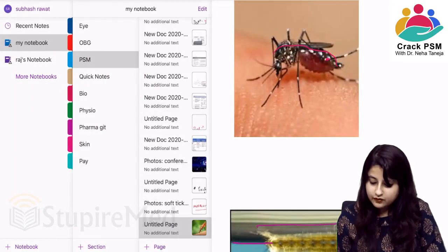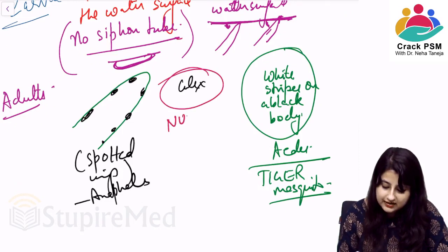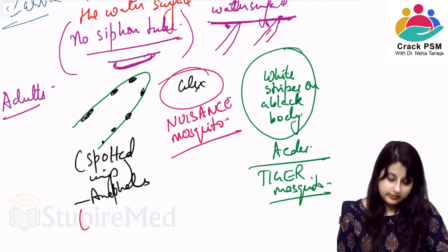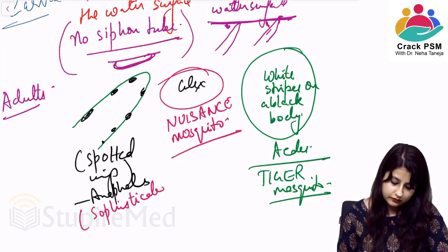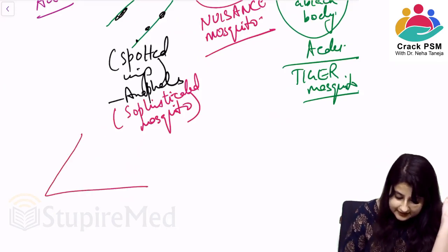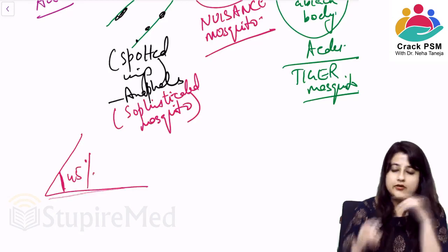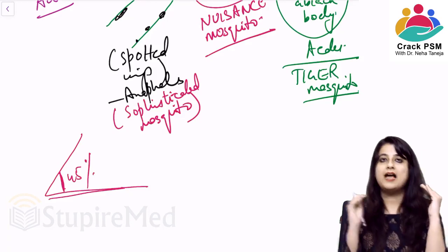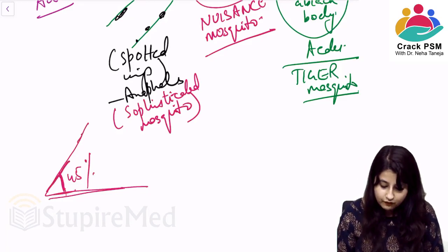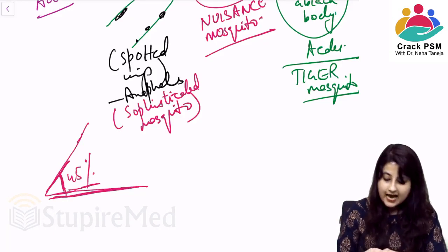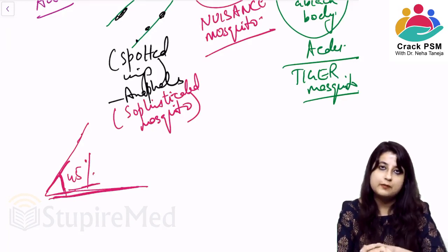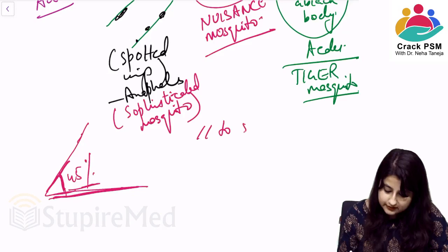Culex is also called the nuisance mosquito because it breeds in dirty water. Anopheles, breeding in clean water, is called the sophisticated mosquito. Regarding resting position: the adult Anopheles rests at an angle of 45 degrees to the skin when biting. The Anopheles larva rested parallel to the water surface, but the adult rests at 45 degrees. Aedes and Culex adults rest parallel to the skin when they bite.